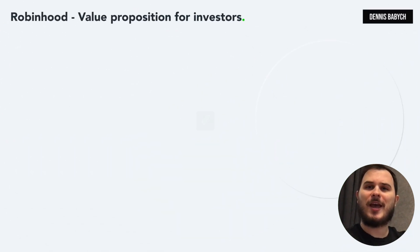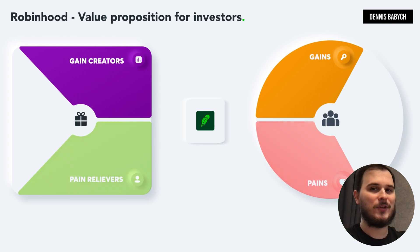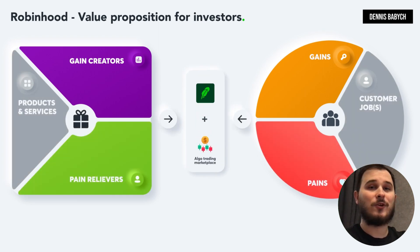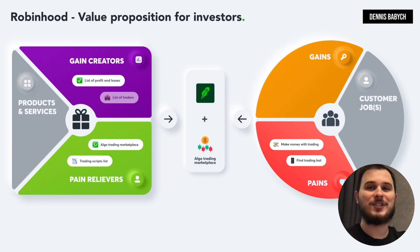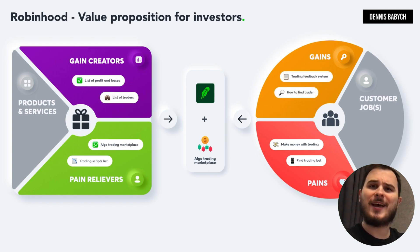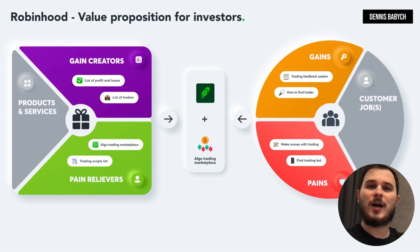To create a successful startup, achieving product-market fit is crucial. This involves innovative thinking and providing disruptive solutions for your target audience. A key step in this process is completing your value proposition table. Let's say you have a unique idea to create an algo trading platform that helps users purchase trading scripts from top traders all around the globe. First, you need to identify users' pains and gains, such as what trader is worth attention.